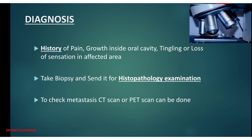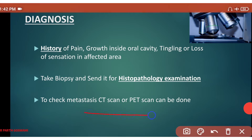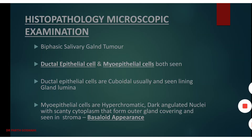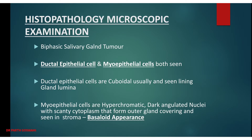Once cancer is detected by histopathological examination, metastasis is checked using CT scan or PET scan. The most important method for diagnosis remains histopathological examination — microscopic morphological examination.